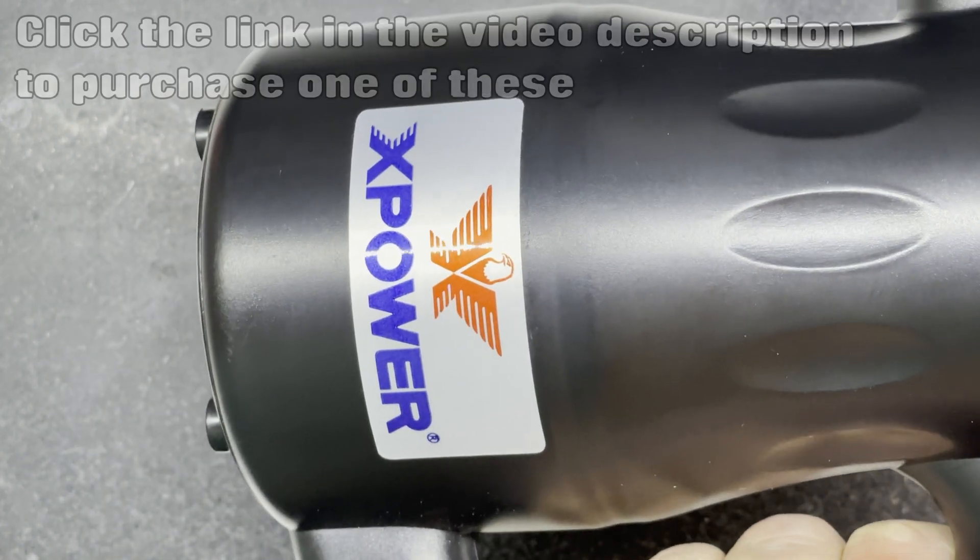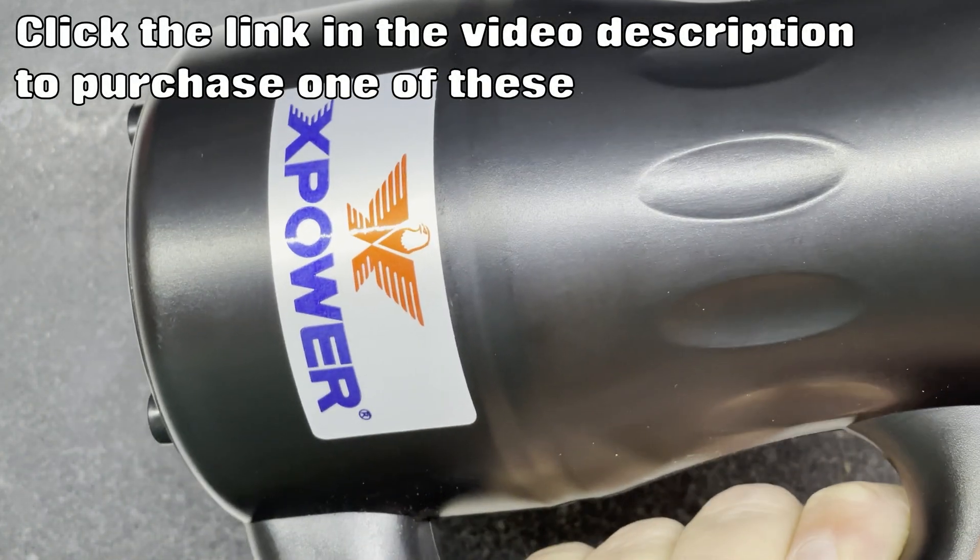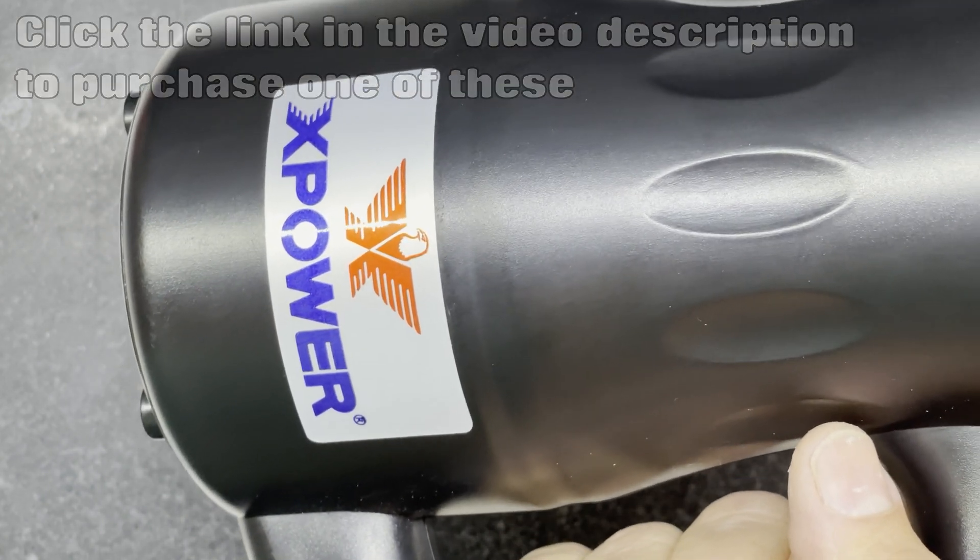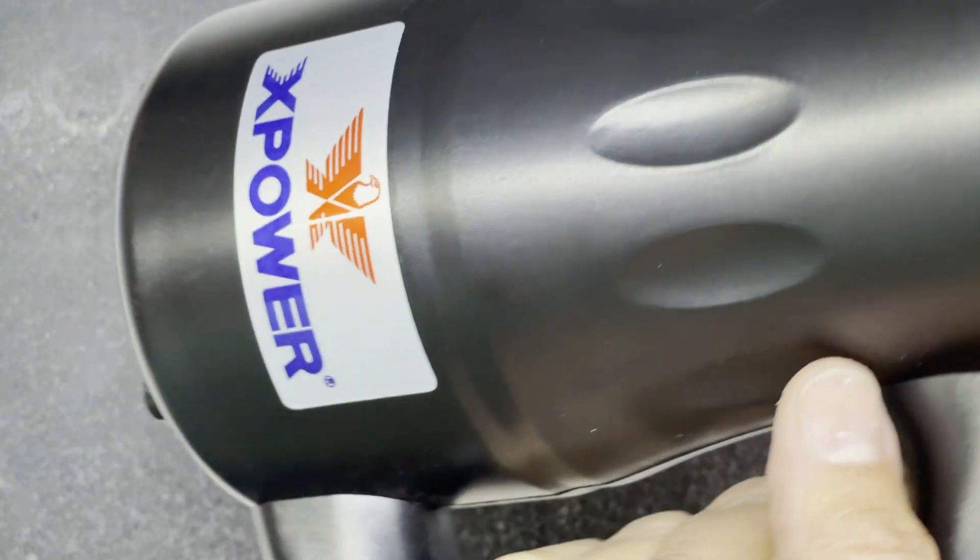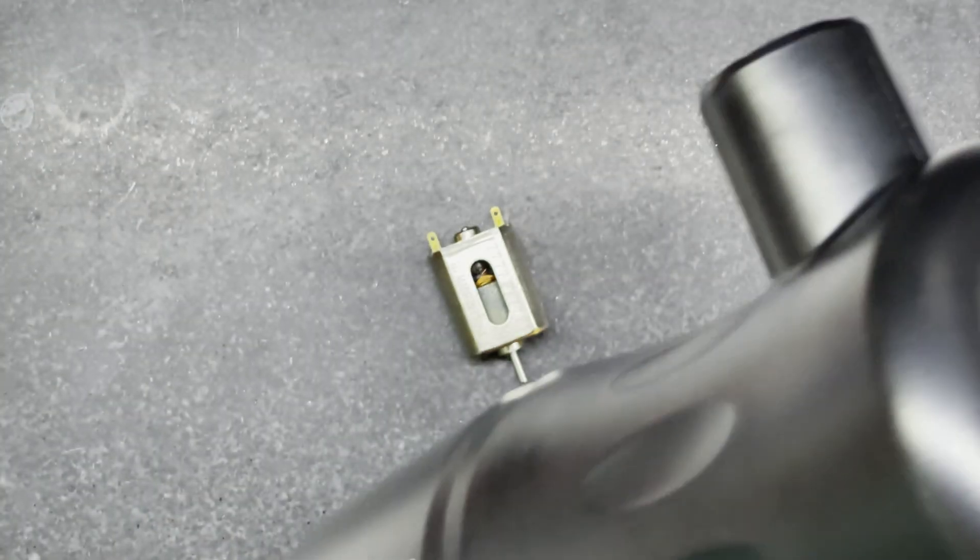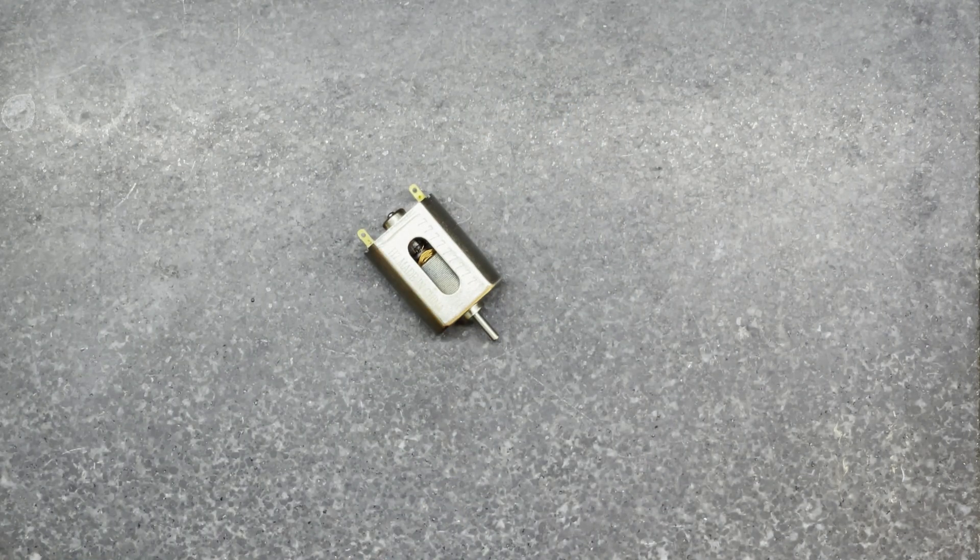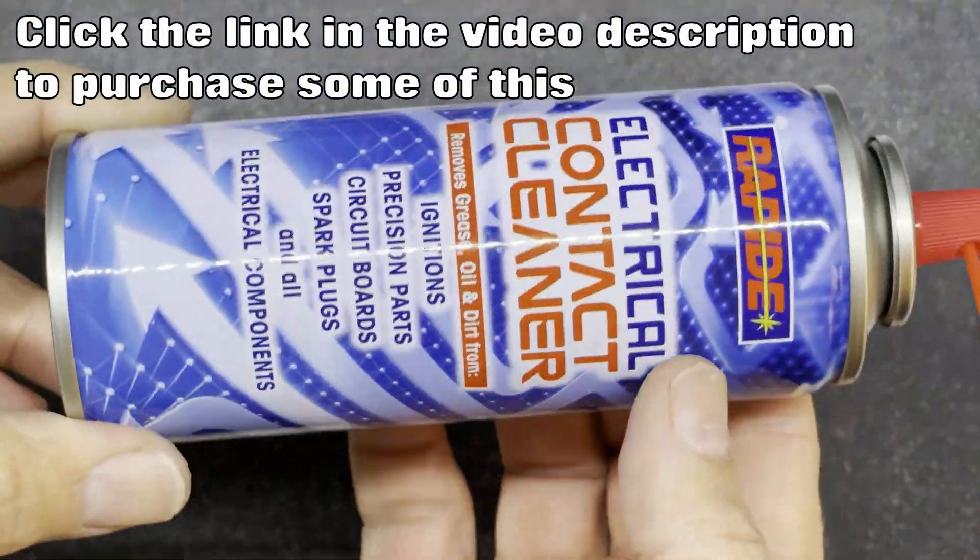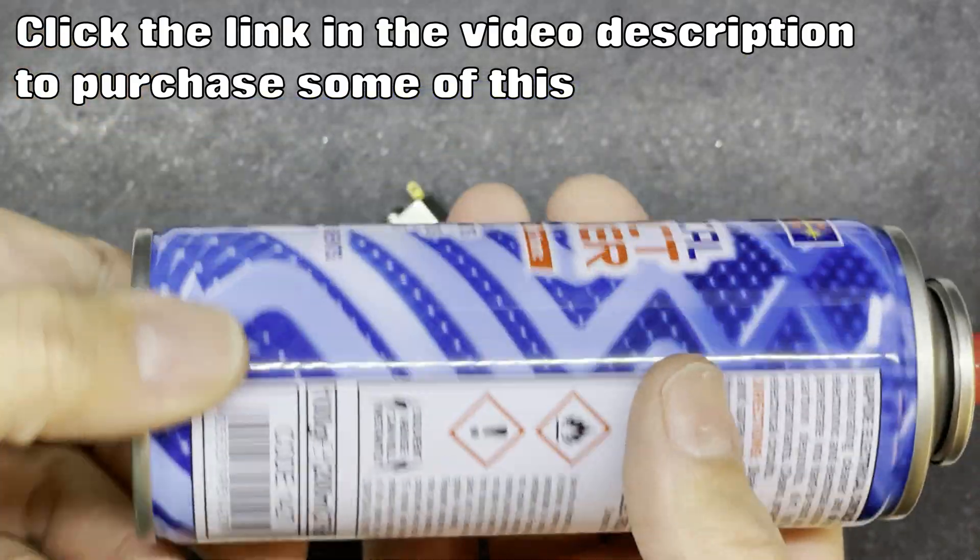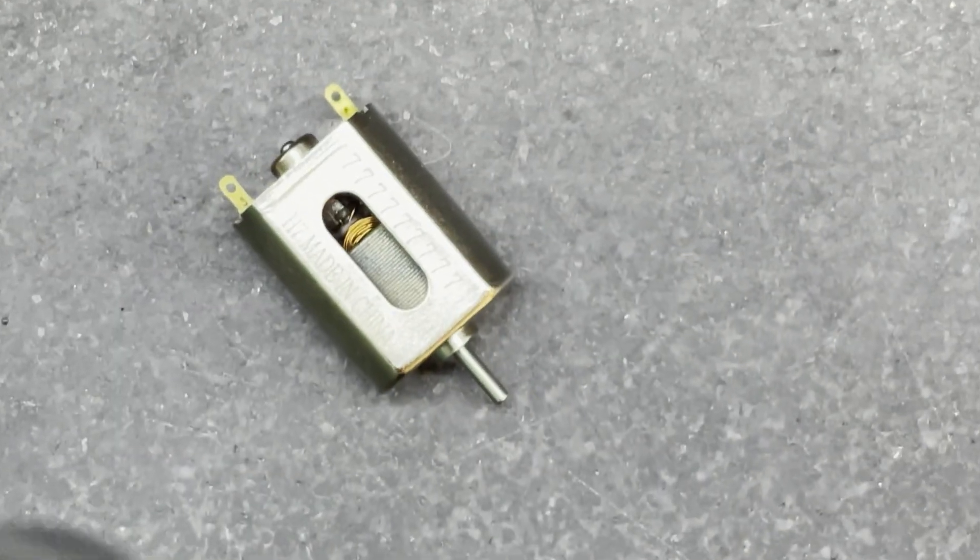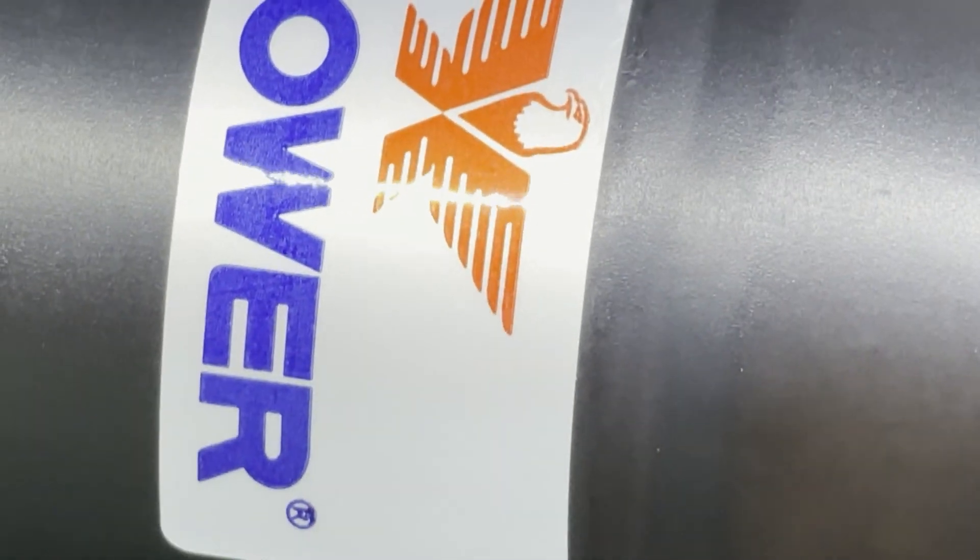I've put a link in the video description for where you can get these. If you follow my link I do earn a very small percentage from it but it doesn't change the price for you. So please follow, please buy. These are absolutely excellent. I've given it a blast out with this to dry it all out and then I've also used some electrical contact cleaner, just to clear out any carbon deposits that were in there from the water. Blast it out with one of these when you're finished. So the motors are now all dry and it's time to see how they're going to perform.